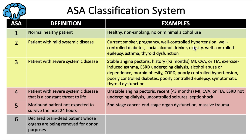ASA 2 also includes well-controlled hypertension, well-controlled diabetes (meaning HbA1c is less than 7% for a current diabetic), social alcohol drinking, obesity, well-controlled epilepsy, asthma, or thyroid dysfunction. These are all conditions that impose little to no functional limitations on the patient.